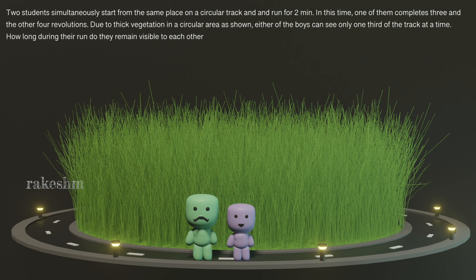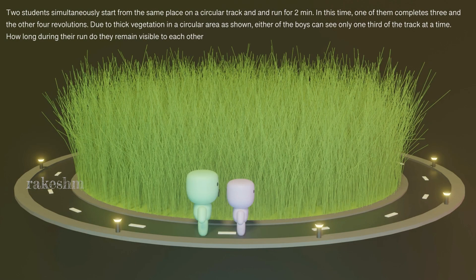I thought they were preparing for another war, but good, it is just a running race. Let us analyze this question from the book Pathfinder, chapter Kinematics. Two students simultaneously start from the same place on a circular track and run for two minutes. So let us say the student is H and the student is S. They go around this circular track, so let us have a look at it.